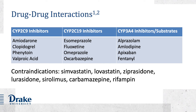Voriconazole is both a substrate and an inhibitor of the hepatic enzymes CYP2C19 and CYP3A4, as well as a CYP2C9 substrate. Because of this, it often presents several drug-drug interactions as challenges for the managing clinician and pharmacist. Some common medications that interact with voriconazole include amiodarone, clopidogrel, fluoxetine, omeprazole, amlodipine, fentanyl, and others included in this table. Depending on the severity of the interaction and clinical judgment, medication doses may be adjusted or temporarily discontinued during the treatment course of voriconazole.